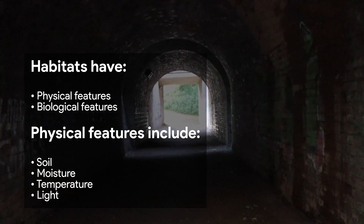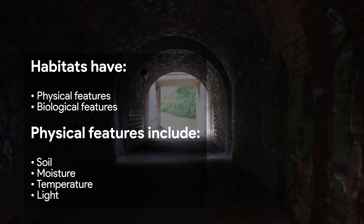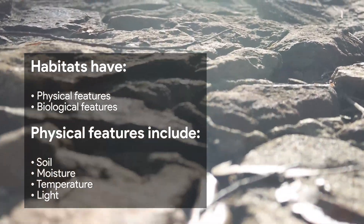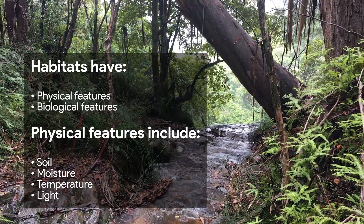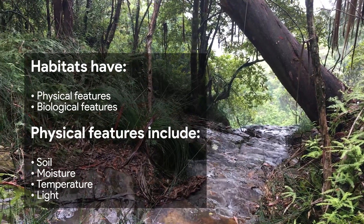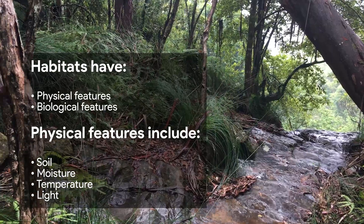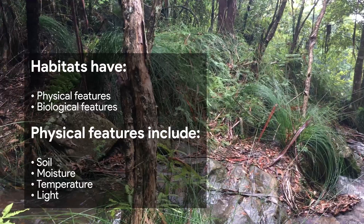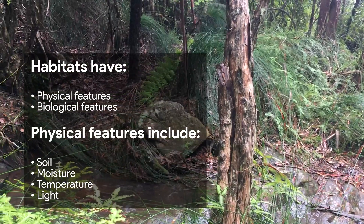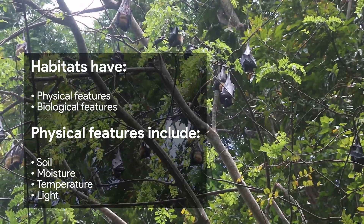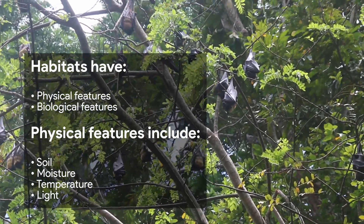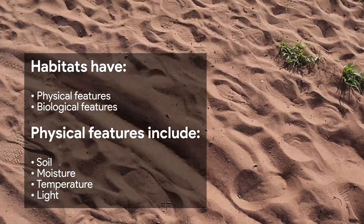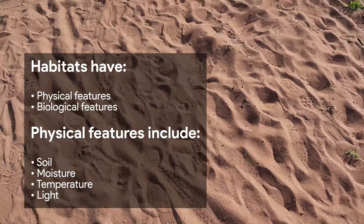Habitats are characterised by two key factors: physical features and biological features. Physical features are non-living components of the habitat, like soil, moisture, temperature, humidity and light. These factors are directly related to the type of organisms living in the habitat. For example, bats often live in habitats with low light intensity. Desert animals, on the other hand, live in habitats with high light intensity.